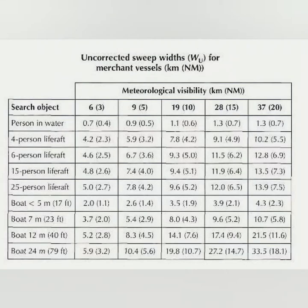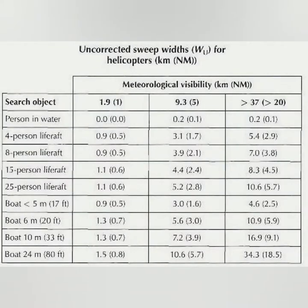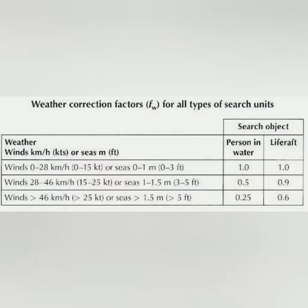For example, if we are looking for 4 persons in a life raft and meteorological visibility is 10 nautical miles, the uncorrected sweep width is 4.2 nautical miles for that condition. Similar tables are available for helicopter and fixed-wing aircraft. For the weather correction factor table, if wind condition is 0–28 km/h and sea state is 0–1 meters height, the correction factor is 1, meaning uncorrected sweep width equals corrected sweep width. In rough weather, the corrected sweep width reduces.